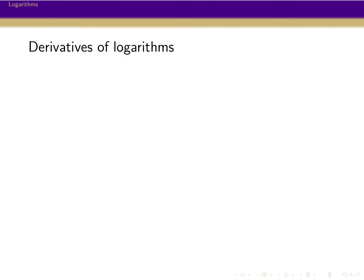Now let's talk about taking the derivatives of logarithms. We're going to use a similar trick to what we used before when figuring out derivatives of roots. We know the derivative of e to the x, and that e and natural log are inverses of each other. The same trick: x is the same thing as e to the natural log of x — that's what it means for e and natural log to be inverses. When I take the derivatives of both sides, I know the derivative of x and e to the x, and so I'll be able to figure out what the derivative of natural log has to be.